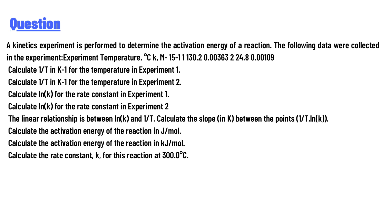We need to calculate: (1) 1/T in K⁻¹ for experiment 1; (2) 1/T in K⁻¹ for experiment 2; (3) ln(k) for the rate constant in experiment 1; (4) ln(k) for the rate constant in experiment 2. The linear relationship is between ln(k) and 1/T. We also calculate the slope in K and the activation energy of the reaction in joules per mole and kilojoules per mole, plus the rate constant k at 300°C.